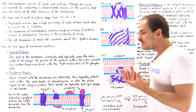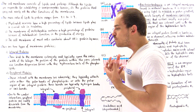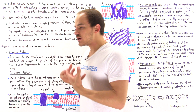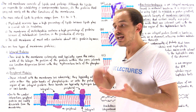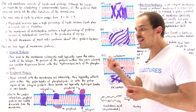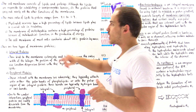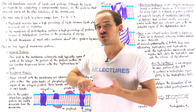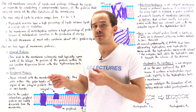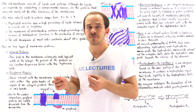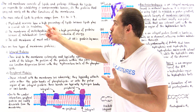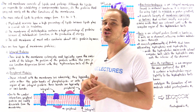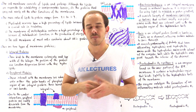Depending on the type of membrane being examined and its functionality, the mass ratio of lipids to proteins can basically differ. It varies anywhere from four-to-one to one-to-four.